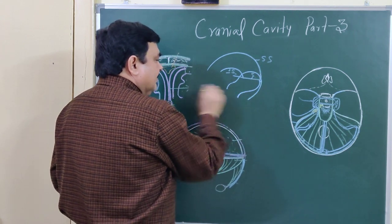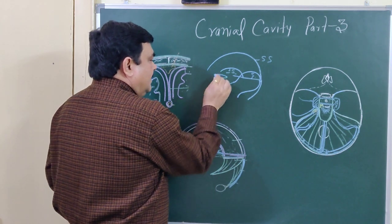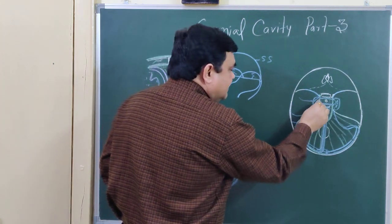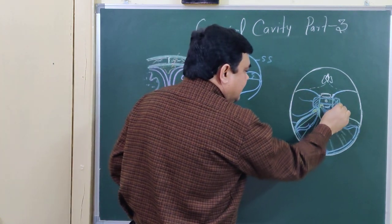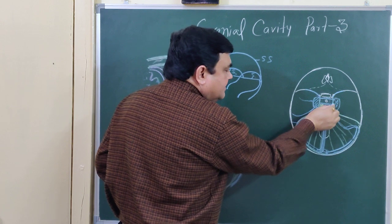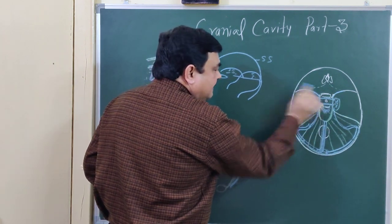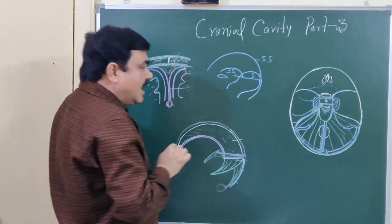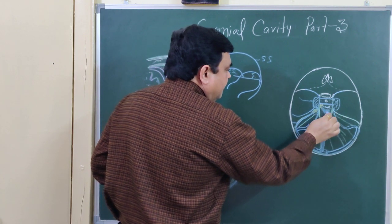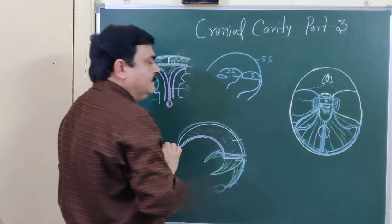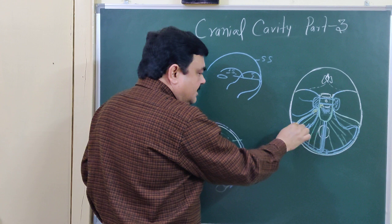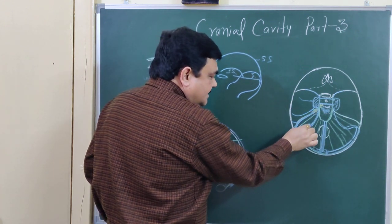Here are some paired sinuses — this is the right and left transverse sinus. Here is the cavernous sinus, here is a sphenoparietal sinus. Here anterior cavernous and posterior cavernous sinuses — these two are unpaired. Here is the basilar plexus of veins, which is unpaired.